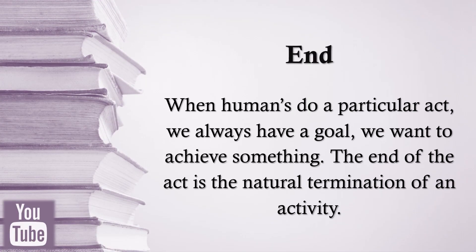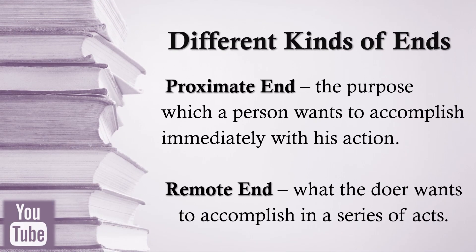Before we discuss man's ultimate end, let us first define what an end is. When humans do a particular act, we always have a goal — we want to achieve something. The end of the act is the natural termination of an activity. There is what we call the proximate end, or the purpose which a person wants to accomplish immediately with his action, and the remote end, or the goal which a person wants to accomplish in a series of acts. For example, eating healthy foods: the proximate end is satisfaction of hunger, but the remote end is the promotion of health.